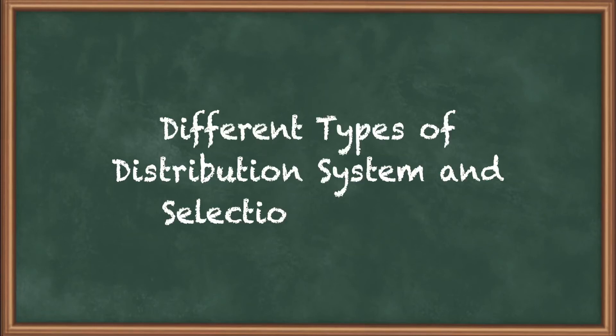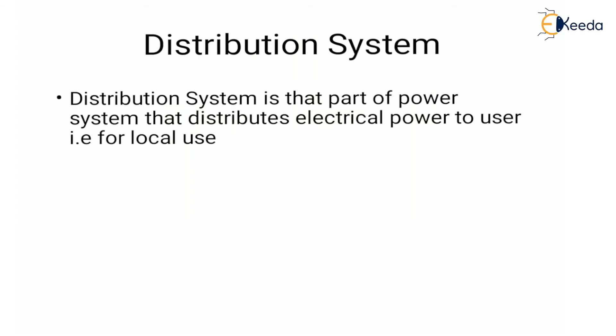Let's start with the next topic: different types of distribution system and selection criteria. A distribution system is that part of the power system which distributes power to the consumer for utilization.